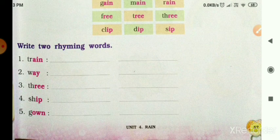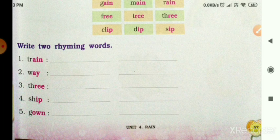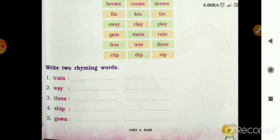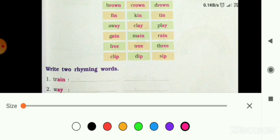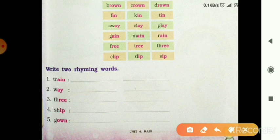Now student, here we have rhyming words choose. So student, rhyming words here. Here we have train, train, A I N. Then you can read main, or rain.